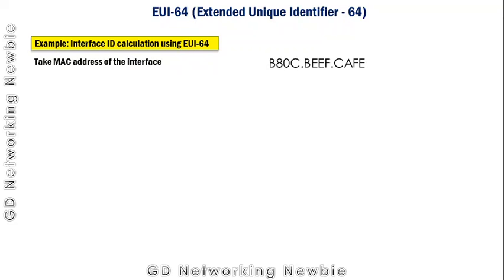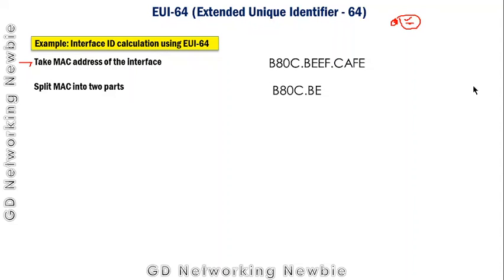Let's take an example. This is the client machine — it has the first prefix part and is now looking for the 64-bit interface ID. It will use its MAC address. Step one: take the MAC address of the interface. Step two: split the MAC into two parts — this is the first part and this is the second part — just split the MAC address into two parts.